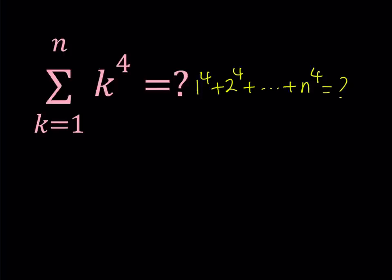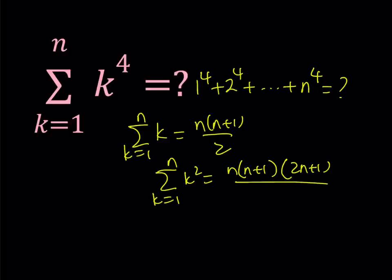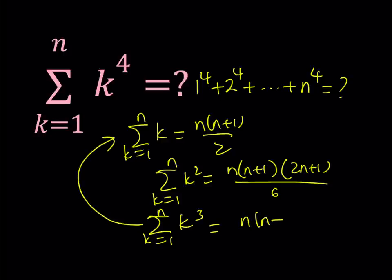We do know that the sum of k from k equals 1 through n is equal to n times n plus 1 divided by 2. Or if you're adding the sum of the squares, it's also well known — it's equal to n times n plus 1 times 2n plus 1 divided by 6. And for the sum of cubes, that's also very commonly used, and it's interesting because the sum of the cubes is related to that same formula but squared. So these formulas should be well known.